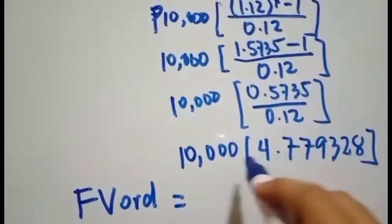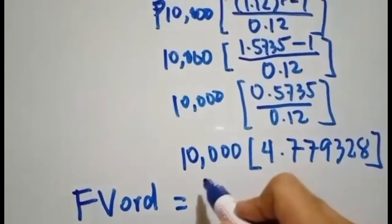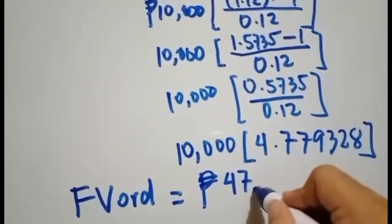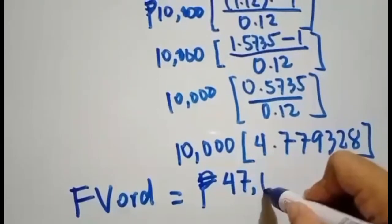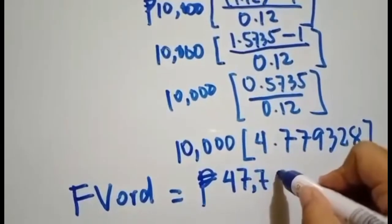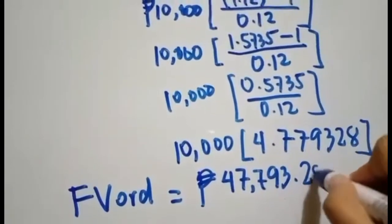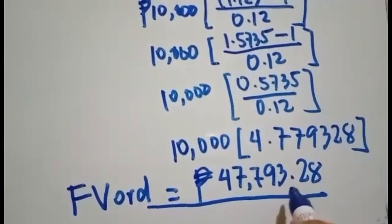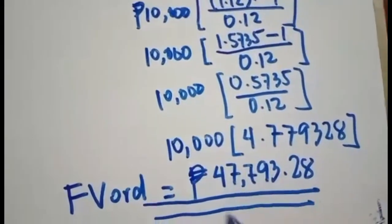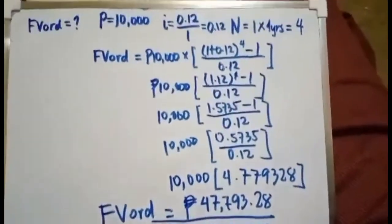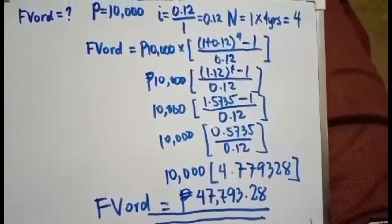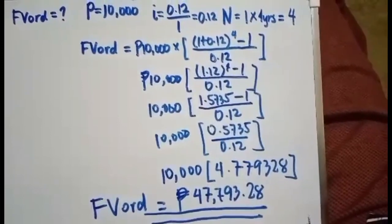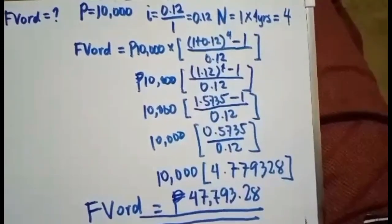What is the product of these values? Using your calculator, you will have this product. Your future value of your ordinary annuity is 47,793 pesos and 28 centavos. The future value of your ordinary annuity is 47,793 pesos and 28 cents.